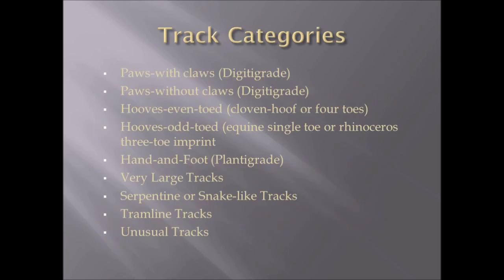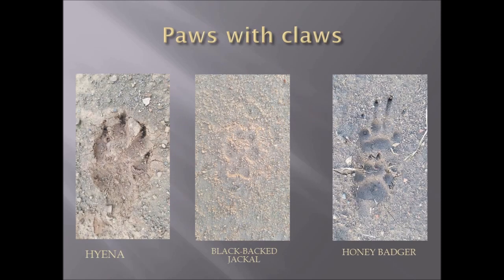Track categories include: paws with claws — digitigrade animals that walk on their tiptoes; paws without claws; even-toed hooves; odd-toed hooves; hand and footprints; very large tracks; serpentine or snake-like tracks; tram-line tracks; and unusual tracks. For paws with claws, you can see the imprints of various animals — all have claw marks in the track along with the paw mark itself, showing individual pads and digits. All are digitigrade. On the left is hyena, in the middle a black-backed jackal, and on the right a honey badger track.